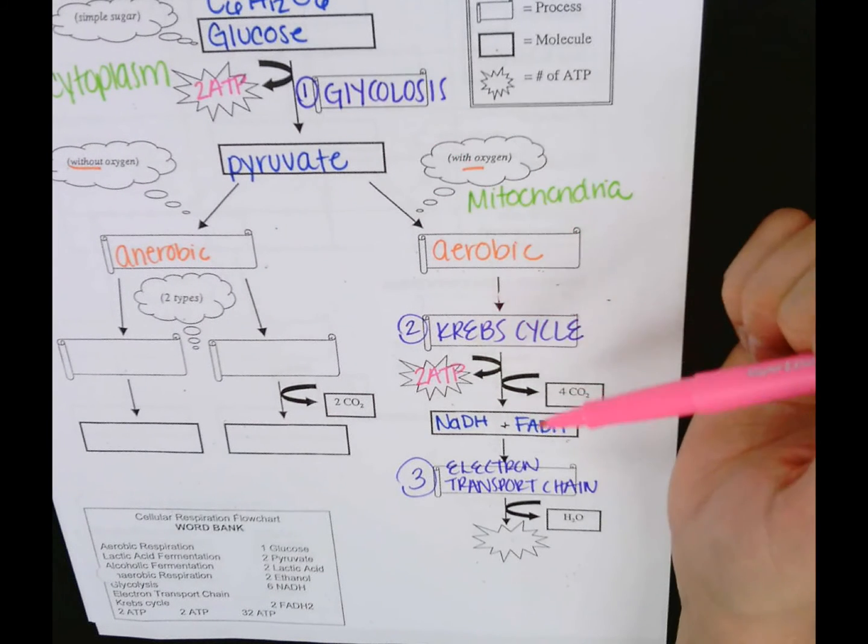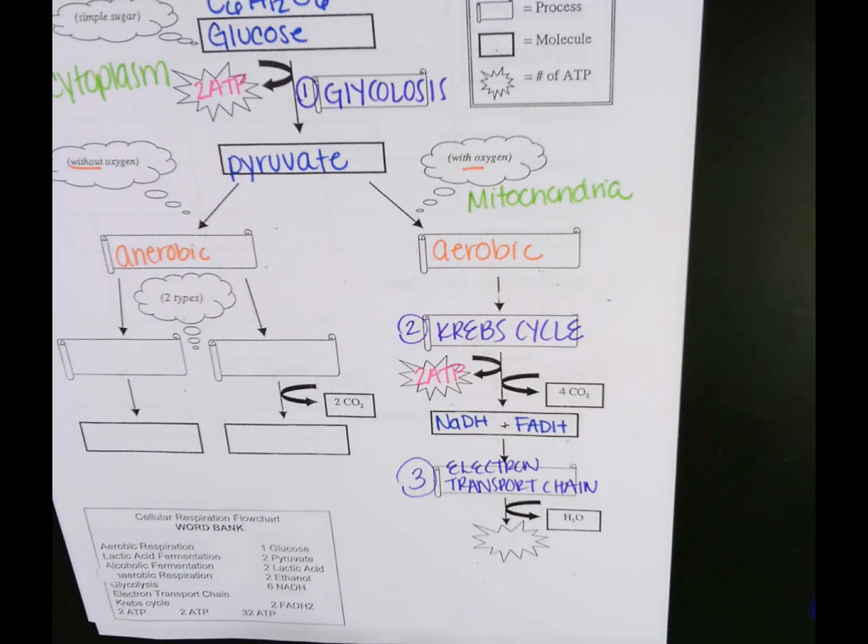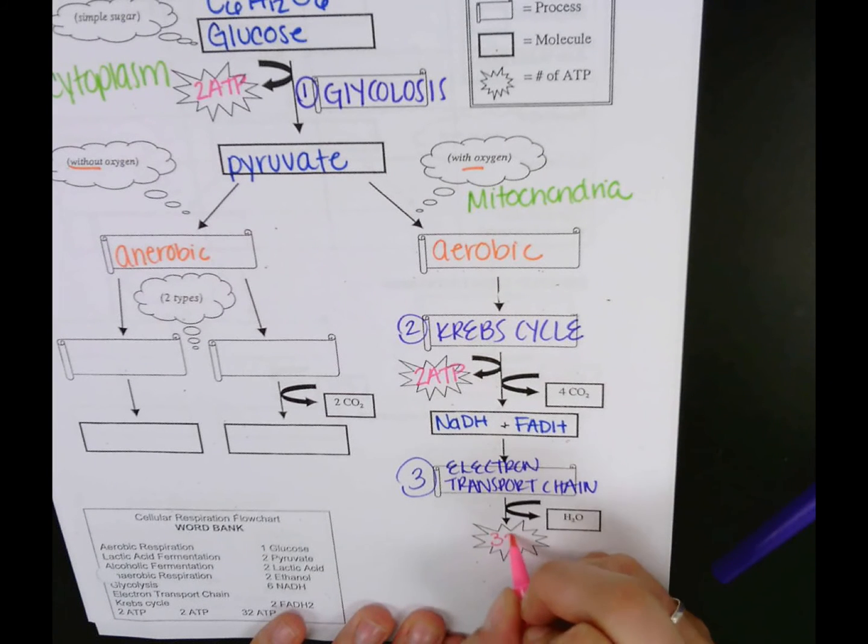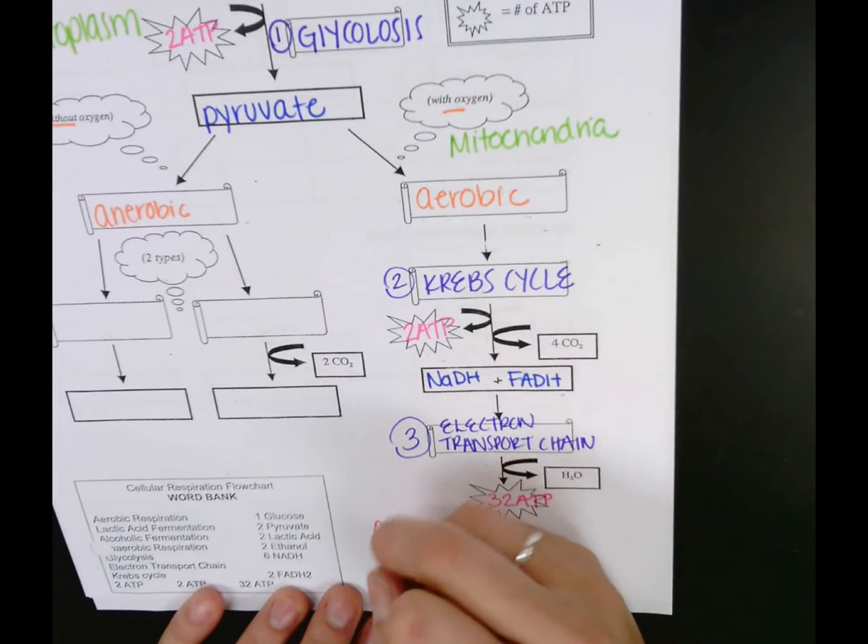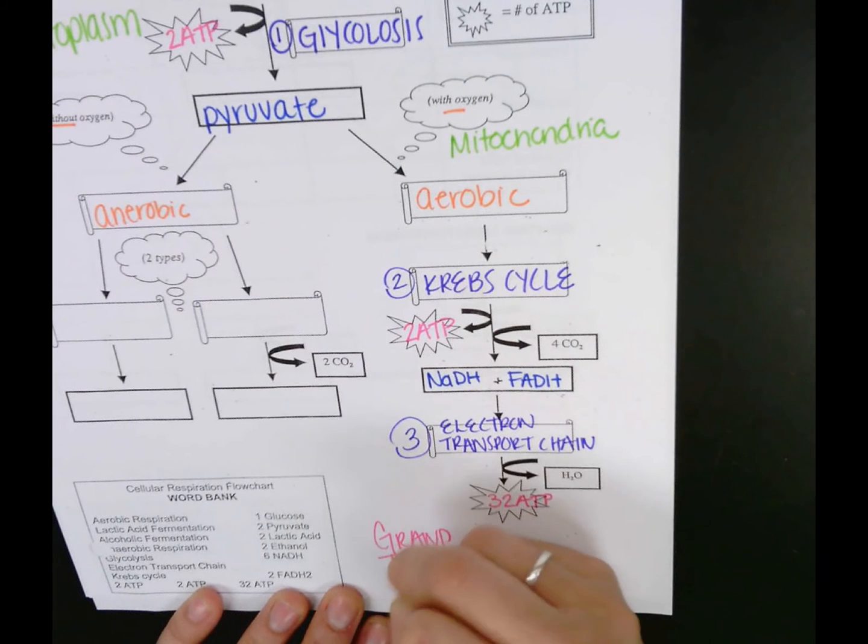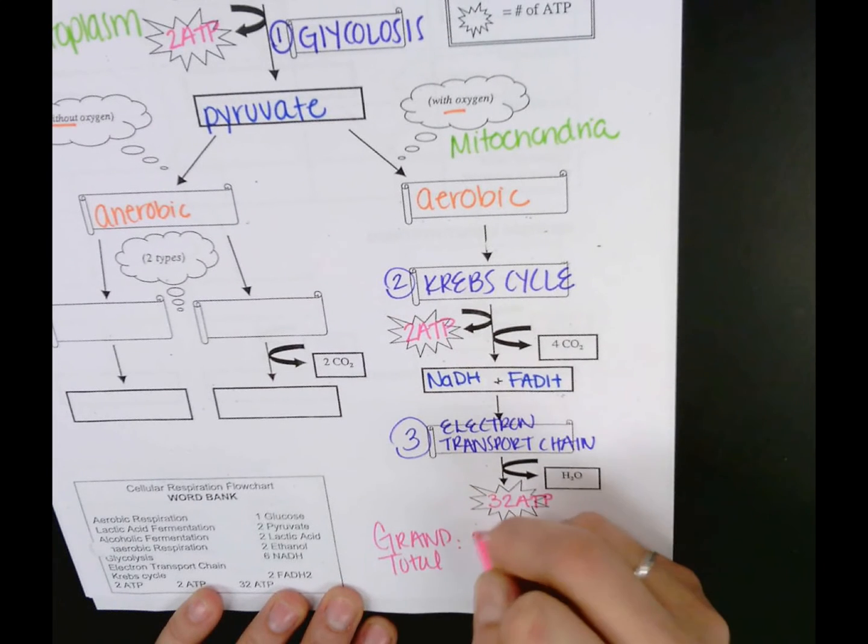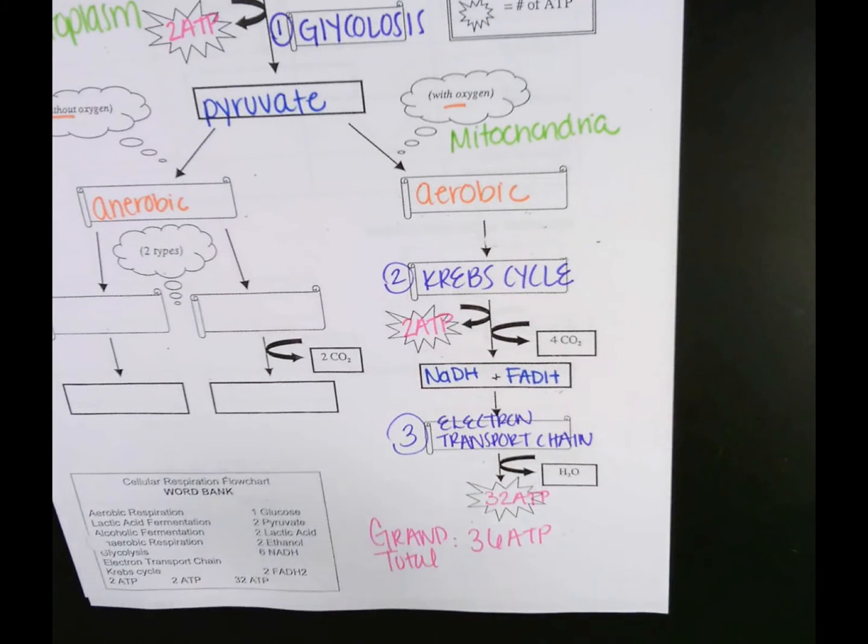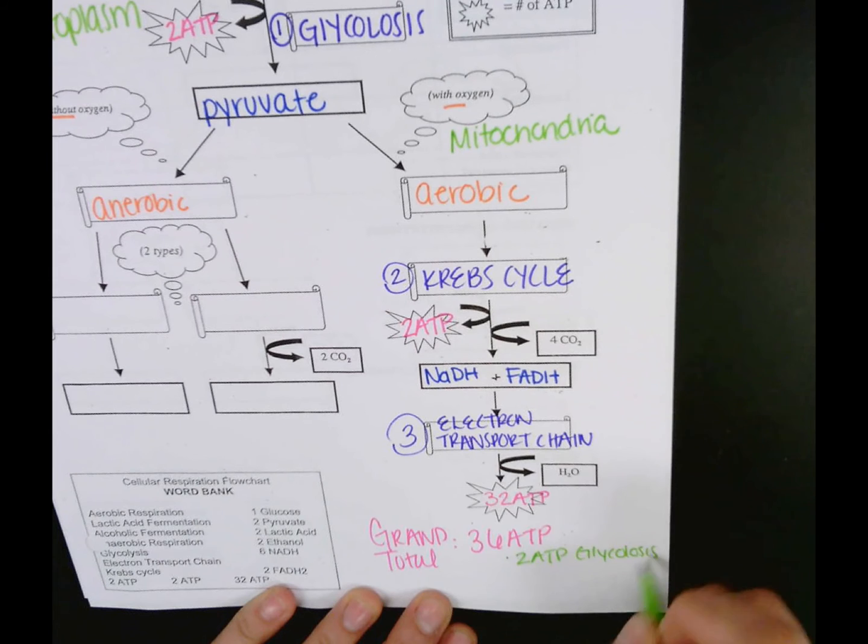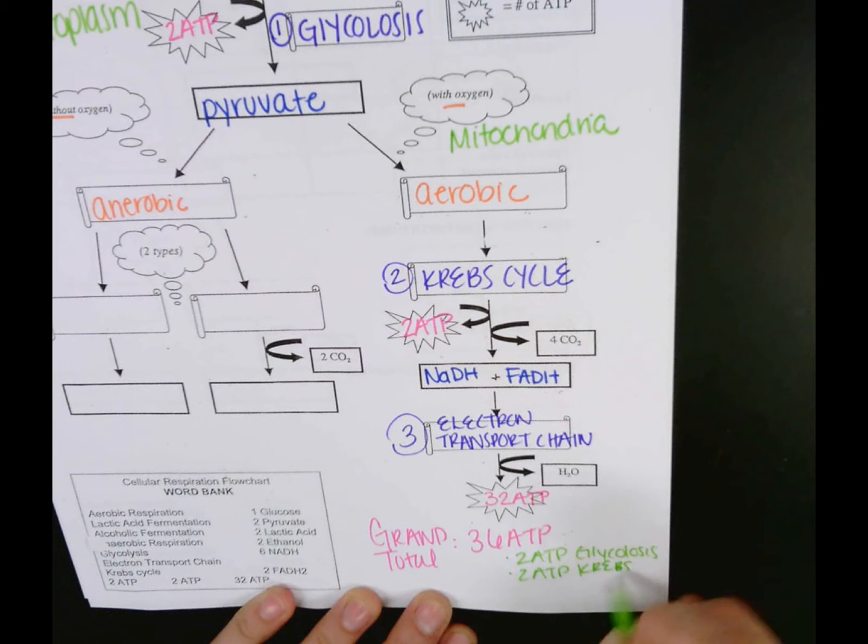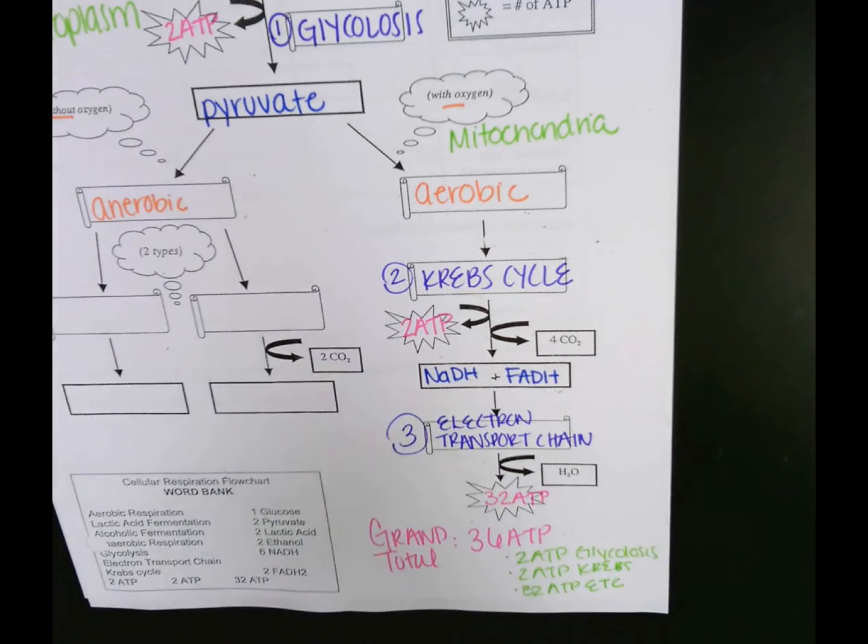So we have two from glycolysis, two from the Krebs cycle. Here we make between 32 and 34 ATP. This is how we're able to get a grand total of 36 ATP. And if you need to break that down, remember we get two ATP from glycolysis, we get two ATP from the Krebs cycle, and then we get 32 ATP from the electron transport chain. So that's our efficient route.